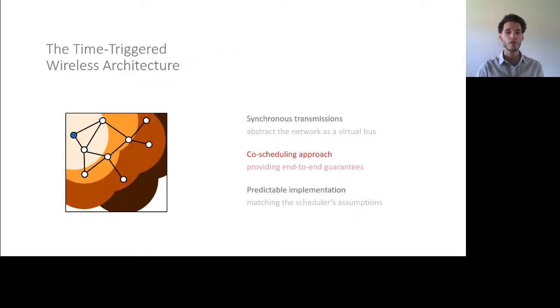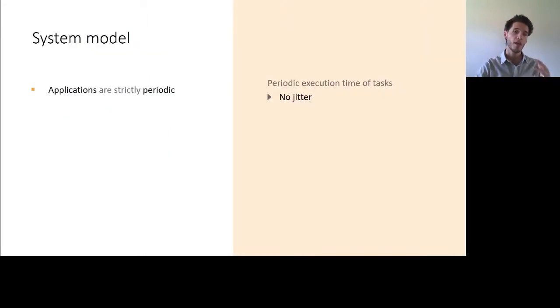As I mentioned in the introduction, the scheduler is responsible for providing end-to-end real-time guarantees at the application level. The question is, what type of applications are we talking about here? In TTW, the applications we are considering are strictly periodic, and by that I mean that the tasks that are part of each application execute strictly periodically. The reason being that it is actually extremely beneficial to have no or negligible jitter on the execution of tasks as far as the controller is concerned. So we aim to provide that in the system design.